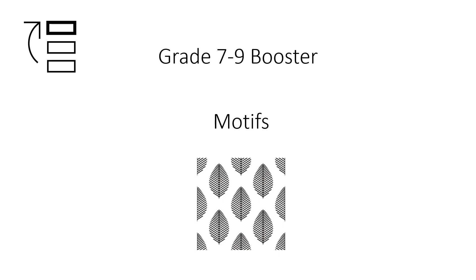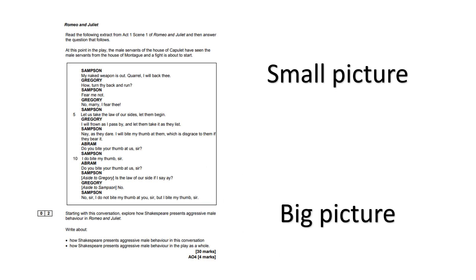Hello and welcome to this booster video looking at motifs. We will talk about motifs with other students, however we're going to look at it in a bit more depth, particularly for getting above a grade 7 in the GCSE English Literature exam. The exam paper, whether it's for Romeo and Juliet or A Christmas Carol, will ask you to look at the extract and the bigger picture, and motifs are really handy because they allow you to look at threads across the text.